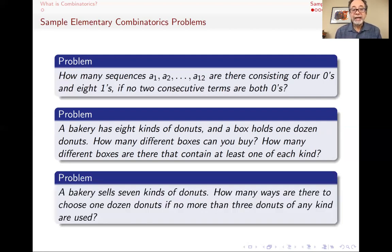The same bakery maybe the next day has seven kinds of donuts. And you want to get again a dozen, but you don't want no more than three of each of the donuts. Another counting problem. Again, all of these are the kinds of counting problems that by the time you're done training in combinatorics, you will be able to do relatively easily.